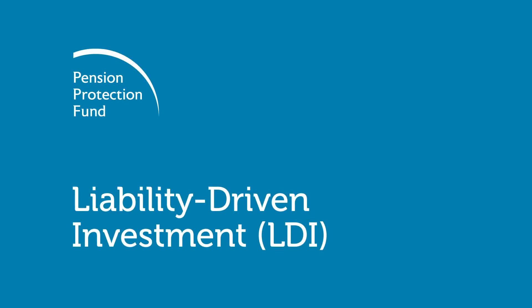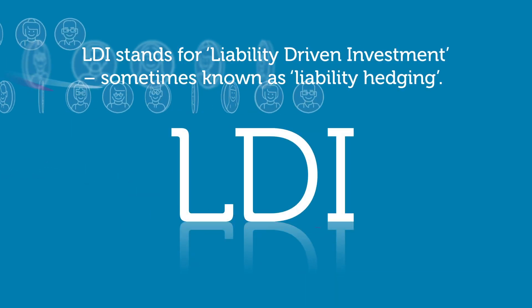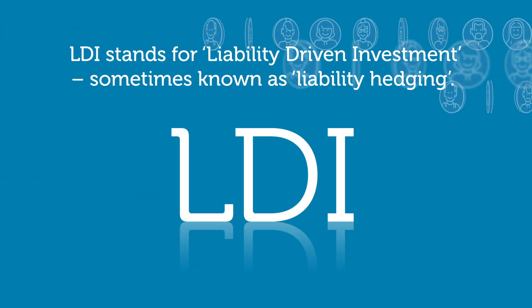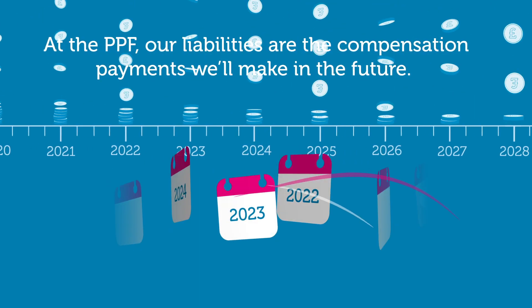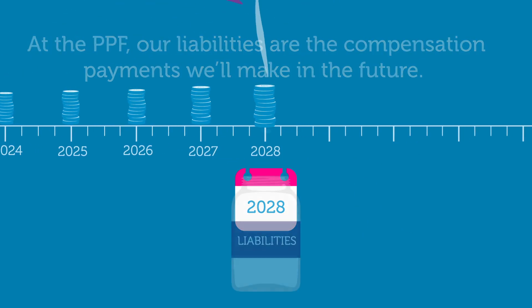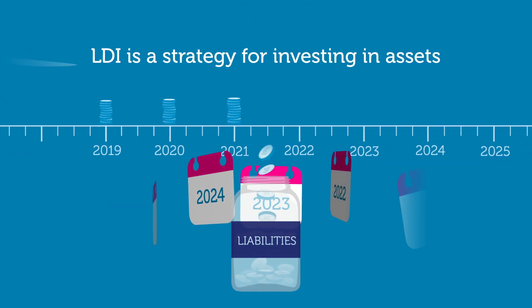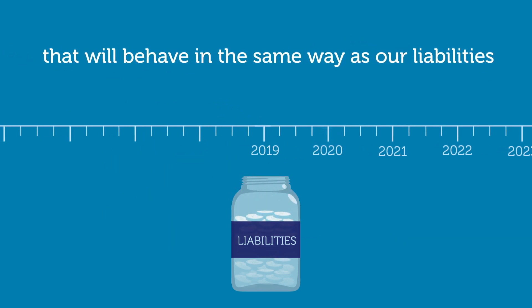Liability Driven Investment, or LDI, stands for Liability Driven Investment, sometimes known as Liability Hedging. At the PPF, our liabilities are the compensation payments we'll make in the future. LDI is a strategy for investing in assets that will behave in the same way as our liabilities.